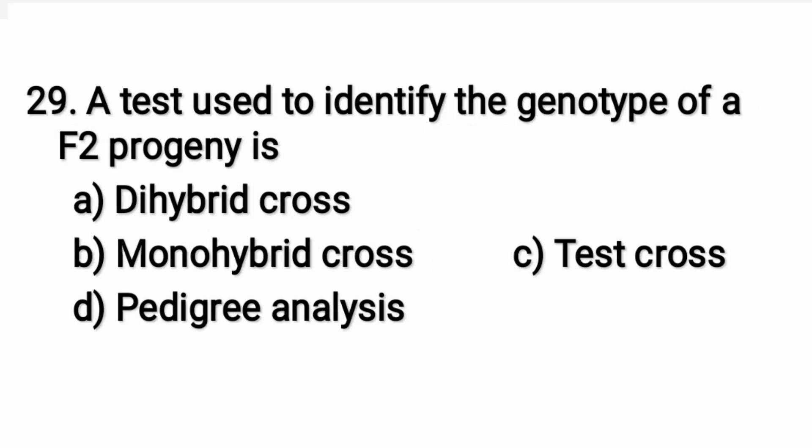A test used to identify the genotype of an F2 progeny is: the right answer is option C — test cross. It is used to identify the genotype of a plant with dominant phenotype at F1 or F2.